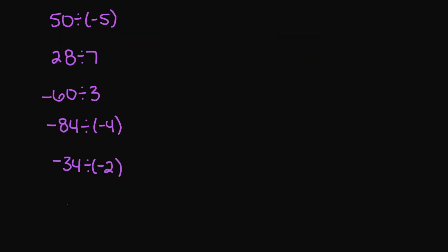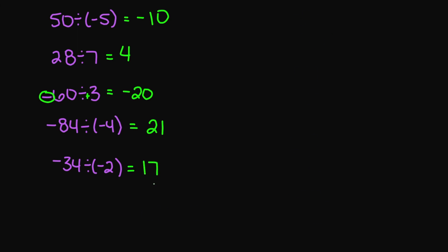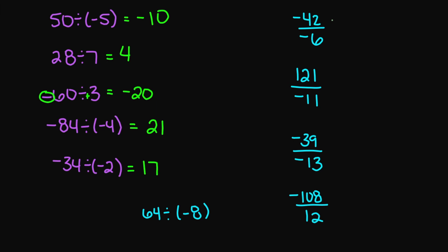Let's look at these examples. 50 divided by negative 5 — positive divided by negative — gives negative 10. 28 divided by 7 — two positives — gives positive 4. Negative 60 divided by 3 gives negative 20. 84 divided by negative 4 — you might expect negative, but this gives positive 21. Negative 34 divided by negative 2 gives positive 17. Negative 42 divided by negative 6 gives positive 7. 121 divided by negative 11 gives negative 11. Negative 39 divided by negative 13 gives positive 3.